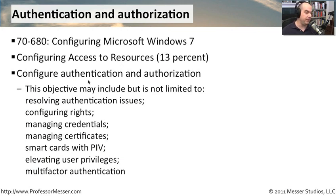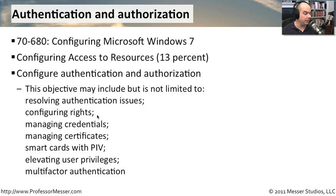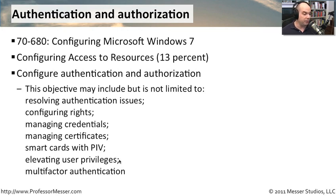This module is specific to configuring authentication and authorization in Windows 7. There is a lot to authentication and authorization in the Windows 7 operating system. We're going to go through resolving authentication issues, resolving and configuring rights, managing credentials and certificates. We'll talk about smart cards and PIV, elevating user privileges, and multi-factor authentication.